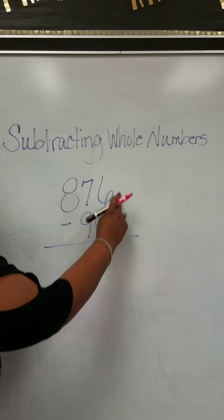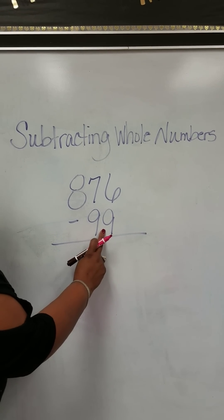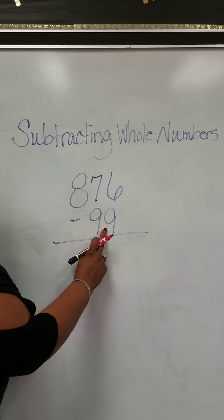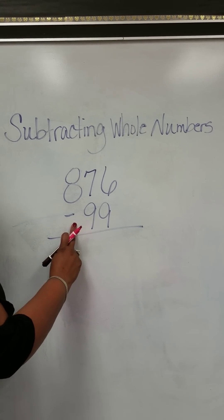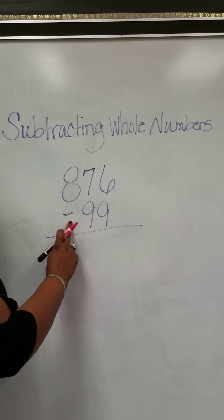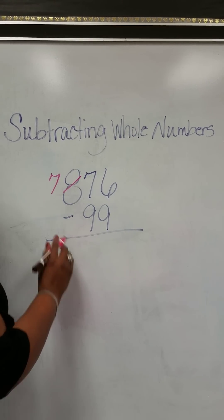In the ones column, we see there's more on the floor. So we go next door to the tens column. Again, there's more on the floor. So we go all the way over to the hundreds column. There's nothing here, so we're going to grab 10 more from the 8 and that becomes 7.